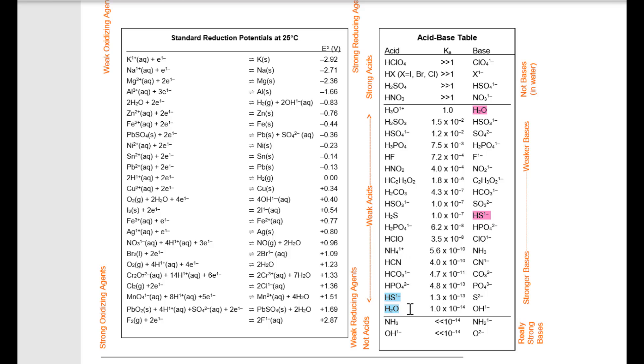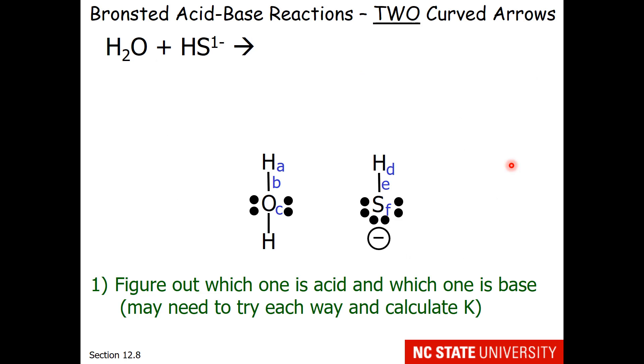What we see is there's not much difference between hydrogen sulfide and water as acids. They're within a factor of 10. But there's a dramatic difference between hydrogen sulfide as a base compared to water. Hydrogen sulfide is the stronger base. So that's what we should make our assignment. Hydrogen sulfide is the base. Water is our acid. So our first step, figure out which one is acid and which one is the base.